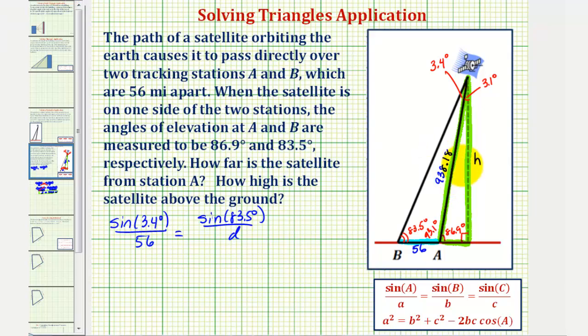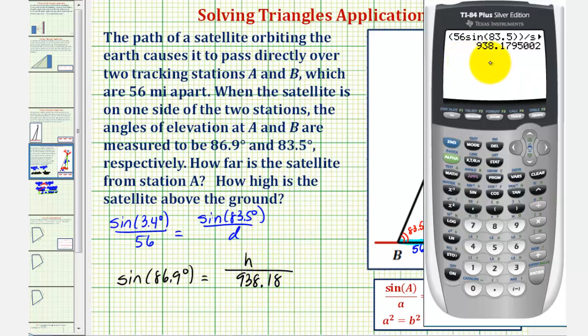Again, using this green right triangle, we can say that sine 86.9 degrees must equal the ratio of the opposite side to the hypotenuse, which would be H divided by the length we just found, which is approximately 938.18. But because we'll have to round again, let's go ahead and find this value to four decimal places. So if we go back to the calculator, let's use 938.1795 instead.